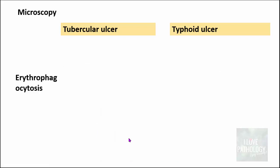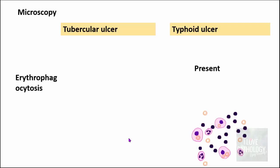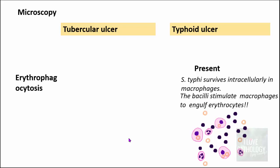Another important microscopic feature found in typhoid ulcers is erythrophagocytosis — that is, macrophages engulfing erythrocytes. These macrophages with engulfed red blood cells are referred to as typhoid cells. This occurs because Salmonella typhi survives intracellularly within macrophages, and these bacilli stimulate macrophages to engulf erythrocytes. No such feature is found in tubercular ulcers.